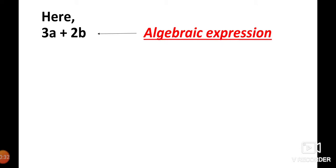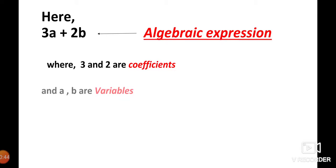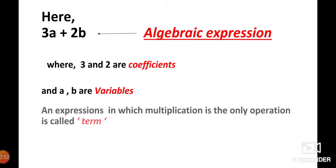In this algebraic expression, 3 and 2 are coefficients, whereas a and b are variables. The value of the coefficients 3 and 2 is constant. An expression in which multiplication is the only operation is called a term.